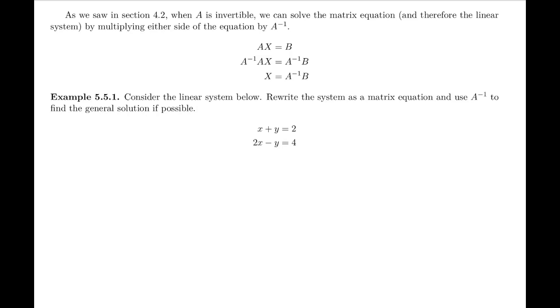Welcome to the last video of section 5.5. We've seen how to write a linear system as a matrix equation, Ax equals B. Back in section 5.2 (the book says 4.2 but should be 5.2, you can correct it in your notes), we saw that when A is invertible, we can solve the matrix equation by multiplying both sides by A inverse.